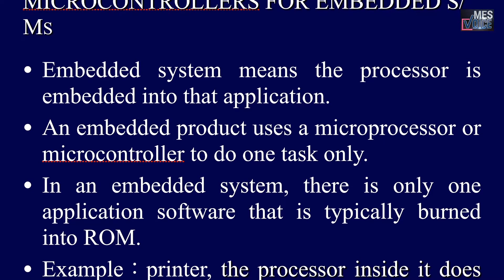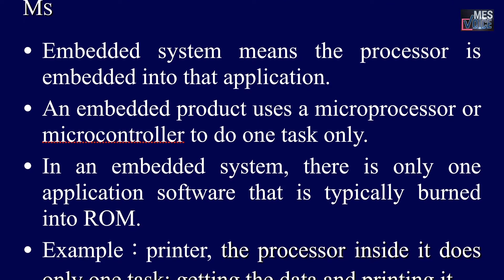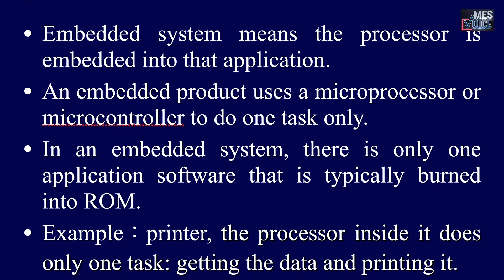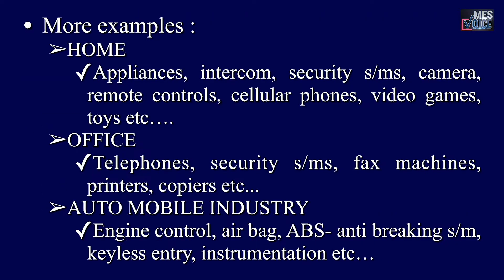Microcontrollers for embedded systems: an embedded system means the processor is embedded into that application. An embedded product uses a microprocessor or a microcontroller to do one task only. There is only one application software that is typically burned into ROM. For example, a printer — the processor inside it does only one task: getting the data and printing it. Examples for home use include home appliances, intercom, security systems, cameras, remote controls, cellular phones, video games, and toys. For office use: telephones, fax machines, printers, and copiers. In the automobile industry: engine control, airbag deployment, anti-braking systems, keyless entry, and instrumentation.